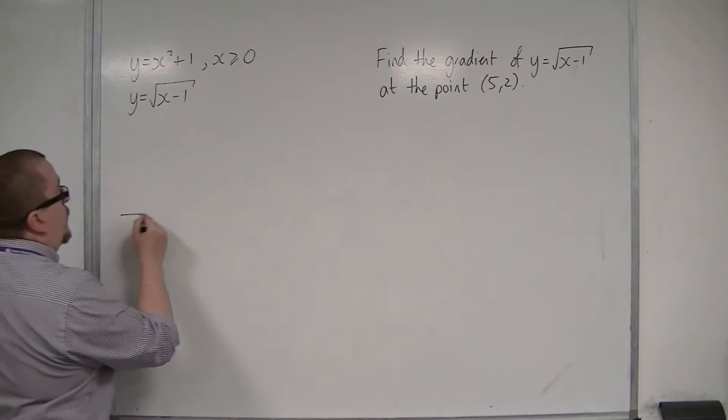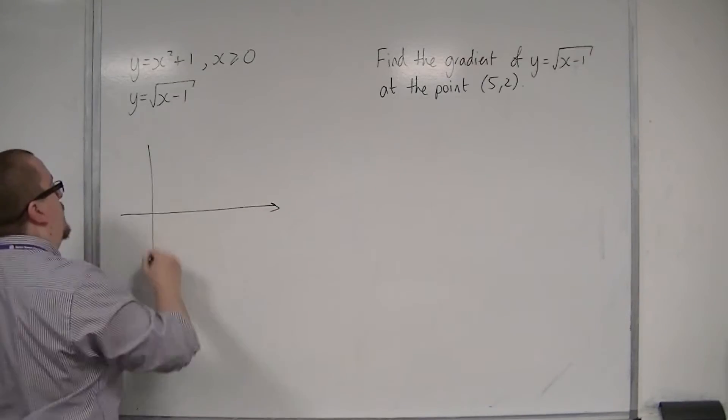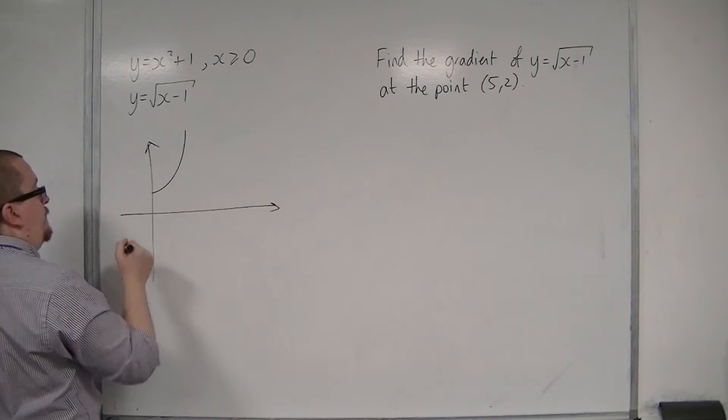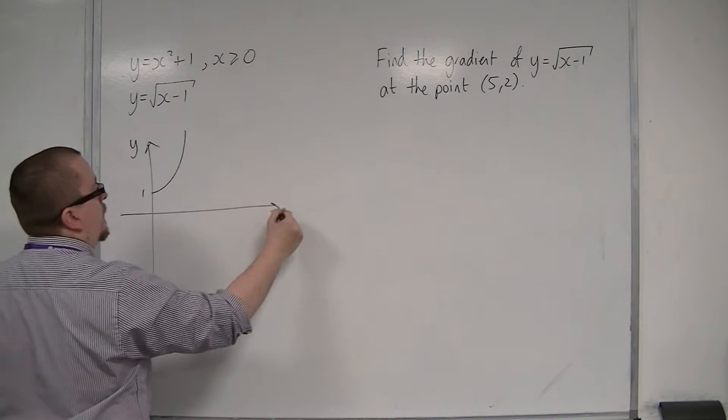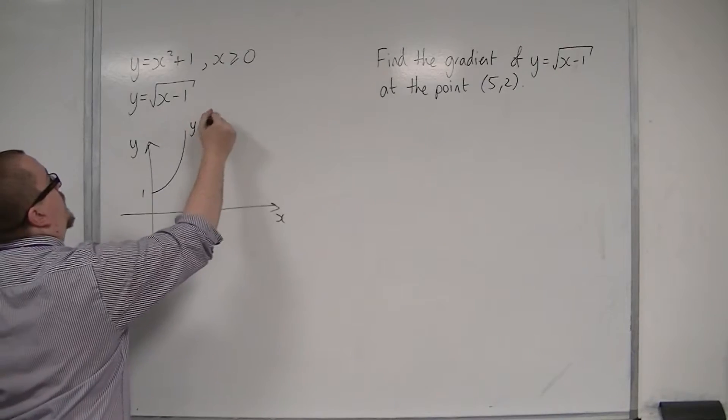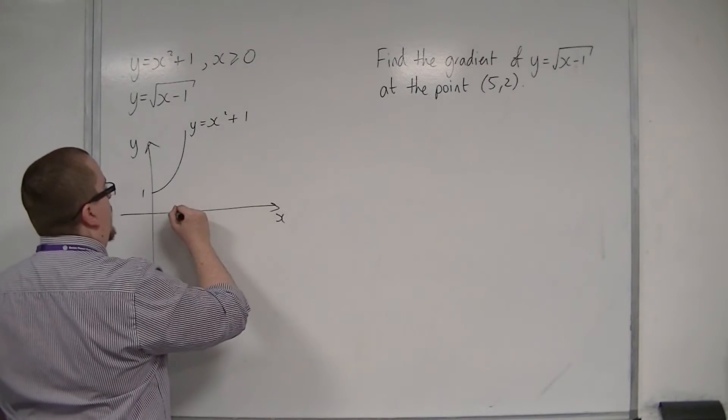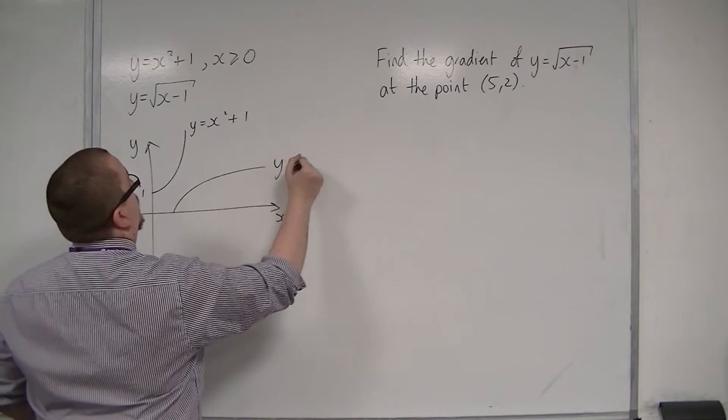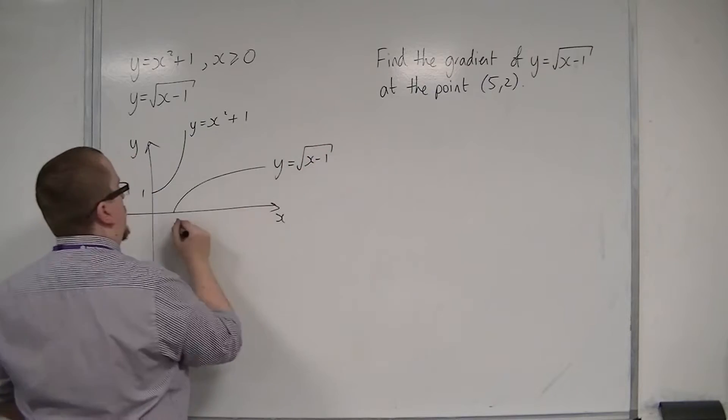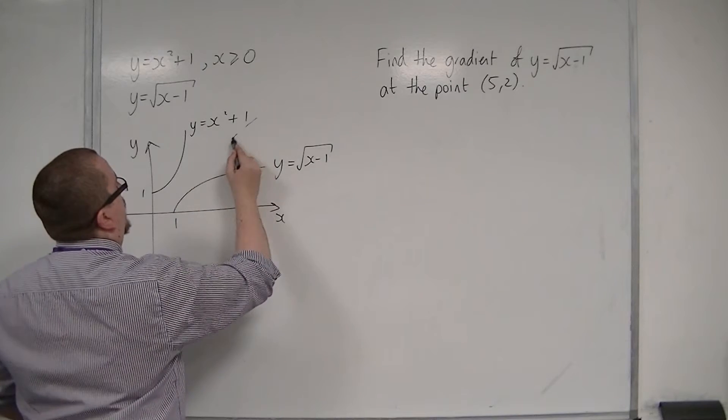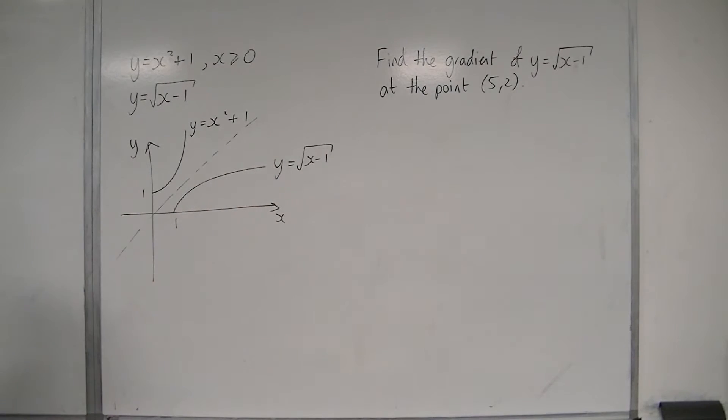So, y equals x squared plus 1 would look something like this, going through 1 on the y-axis. So that's your y equals x squared plus 1. And then y equals the square root of x minus 1 looks something like this, where that's 1 on the x-axis. And these, because they are inverse functions, there's this line of symmetry. They're symmetric in the line y equals x.